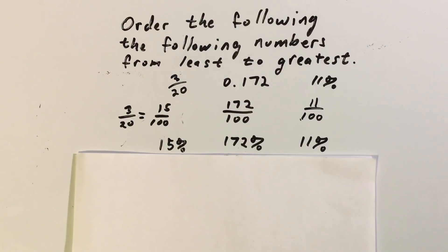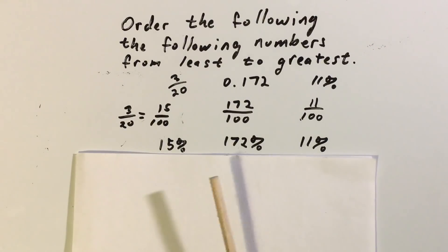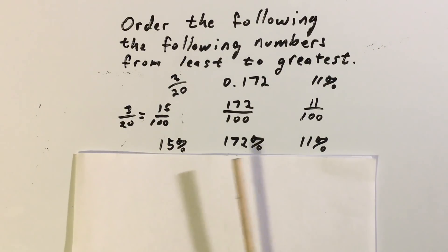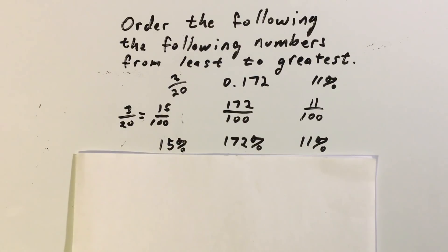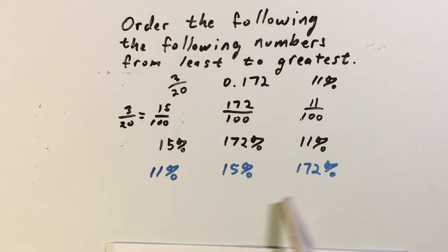Here are those numbers. As you can see, eleven percent is our smallest number, fifteen percent is the next, and one hundred seventy-two percent is our last number. And here are the numbers now in order from least to greatest in percent form.